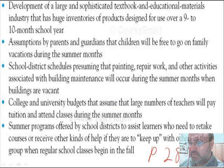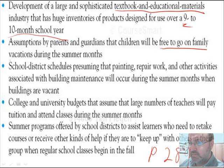This is straight out of the textbook on page 289, the constraints. Think of this: there's a development of a large and sophisticated textbook and educational materials industry that has huge inventories of products designed to use over this 9- to 10-month school year. This is one reason why we don't have year-round school. Here's another one: assumptions by parents and guardians that children will be free to go on family vacations during the summer months.